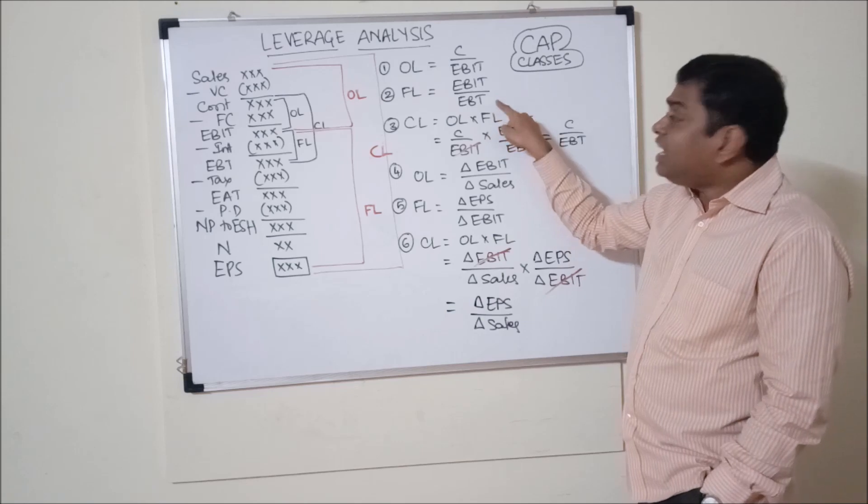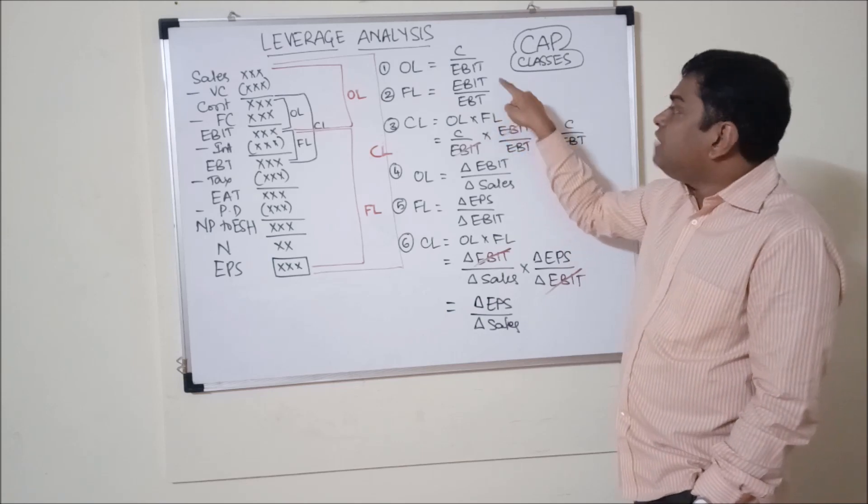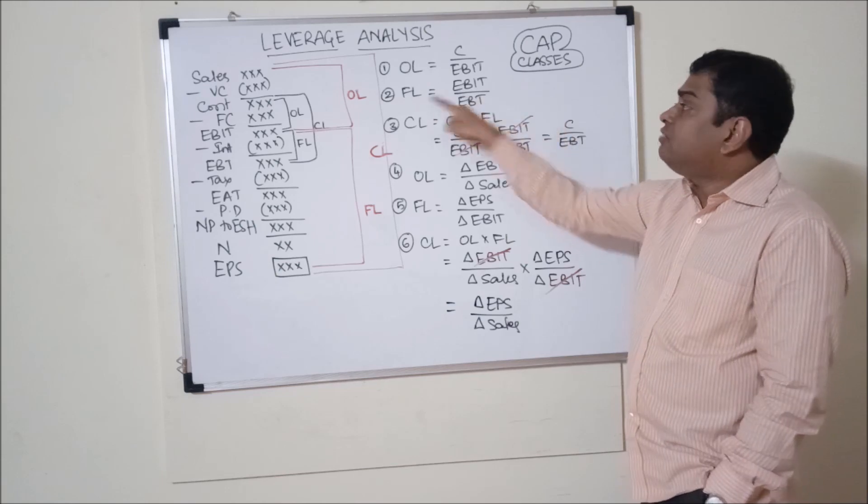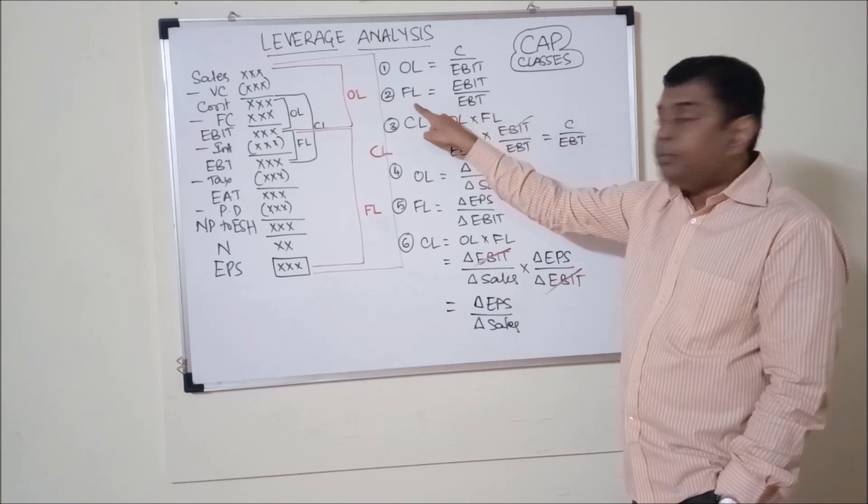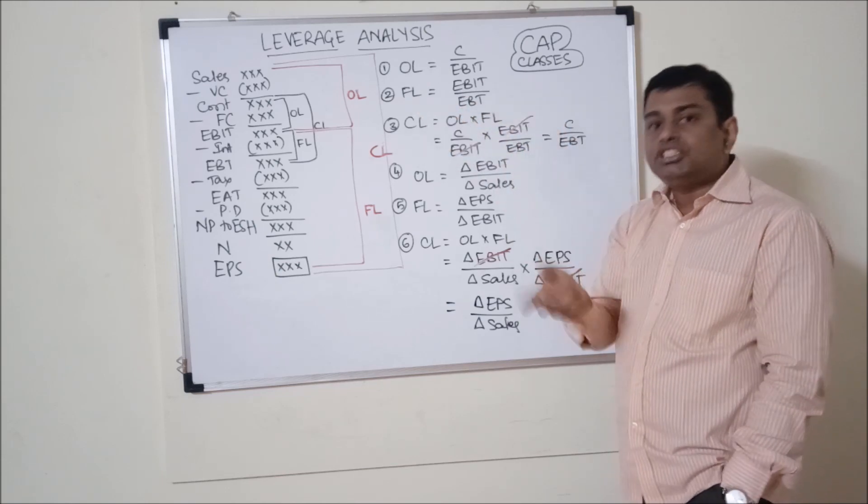If EBIT is say 1 rupee, if EBT is say 2 rupees, then financial leverage will be 2. That means EBIT is 2 times EBT.